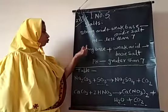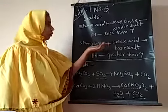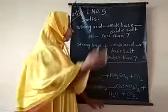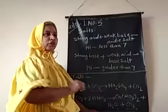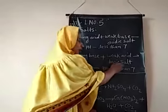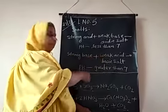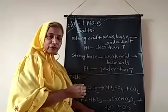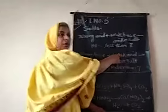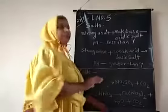Similarly, when a strong base and a weak acid combine and react together, a basic salt is formed. To confirm a basic salt is formed, we take the solution of this basic salt and test it with a pH paper. The pH value is greater than 7. A pH value greater than 7 shows that the salt formed by the action of a strong base and a weak acid is a basic salt.